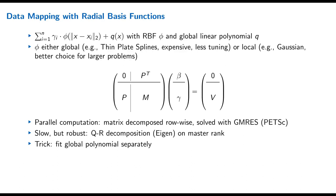There is one last trick: we do not solve the complete system directly. Instead, we first fit the polynomial separately and then only solve a linear system with the matrix M for the RBF part. This improves the condition of the matrix, and for local RBFs gives a sparse matrix, making it much cheaper to solve.